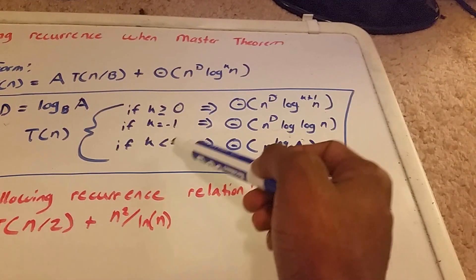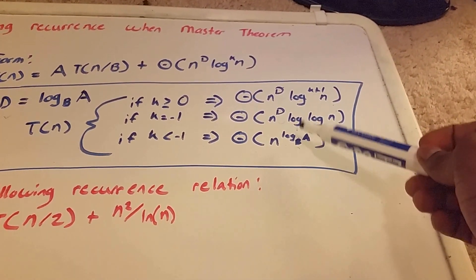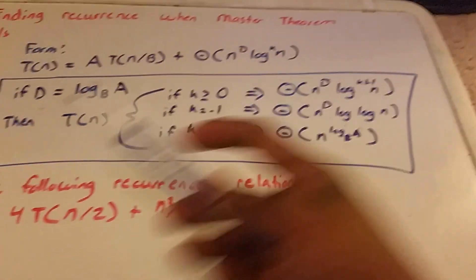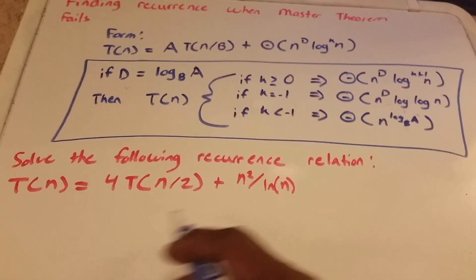And if k is less than negative 1, then Θ is n to the power of log base B of A. So let's go ahead and use this to figure out the answer down here.